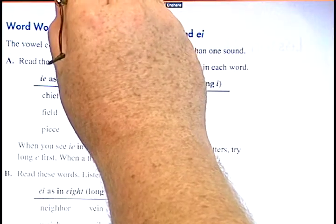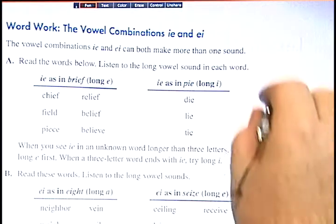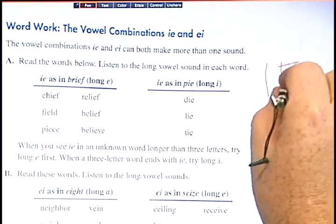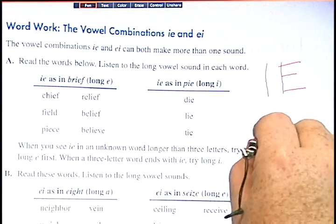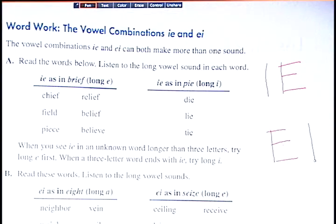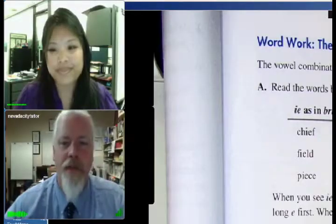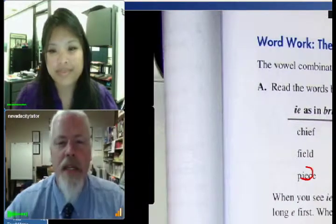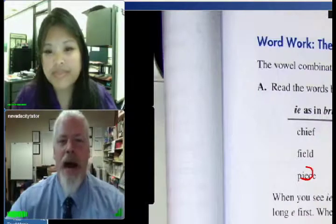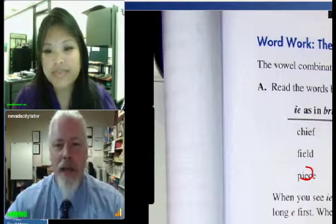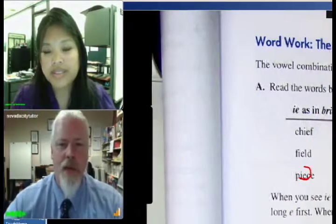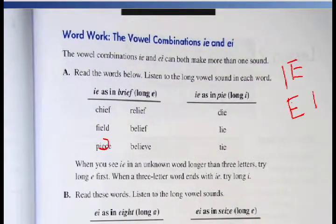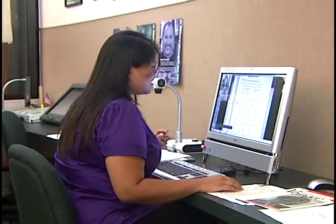I'll put back up what we had before — IE and EI. You did a great job on that first section with 'peace' and 'believe' and the other words. Okay, how about the second group: IE as in 'pi,' and that's the long I, like 'high' and 'sky.' You've seen some of those before. Can you read those three for me? Die, and lie, and tie.